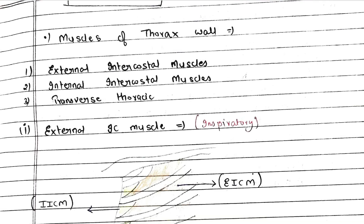Hello guys, welcome to my YouTube channel Exam Point of View. Today we will read about muscles of the thoracic wall. We will go through three muscles, which is the transverse thoracic muscle with its three parts. We will also cover the external intercostal muscle and the internal intercostal muscle. If you want to know more, join our Telegram channel in the description. Let's start.